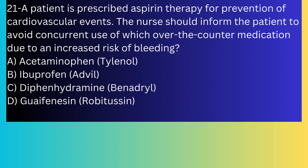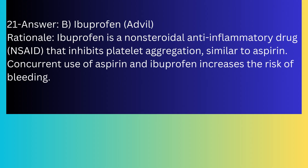Question number twenty-one: A patient is prescribed aspirin therapy for prevention of cardiovascular events. The nurse should inform the patient to avoid concurrent use of which over-the-counter medication due to an increased risk of bleeding? A) Acetaminophen (Tylenol), B) Ibuprofen (Advil), C) Diphenhydramine (Benadryl), D) Guaifenesin (Robitussin). The answer is B, ibuprofen (Advil). Ibuprofen is an NSAID that inhibits platelet aggregation, similar to aspirin. Concurrent use of aspirin and ibuprofen increases the risk of bleeding.